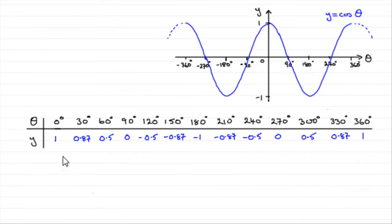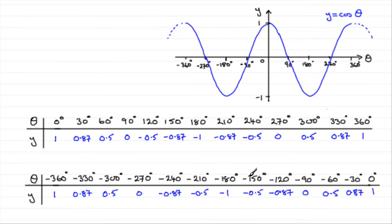As with any graph, you can draw up a table of values. Like in this one, I've drawn up 0 to 360 degrees. You could use your calculator, as long as it's in degrees mode, to work out the corresponding values for cos theta and plot them. The same applies if you want to go from minus 360 degrees to 0 degrees.